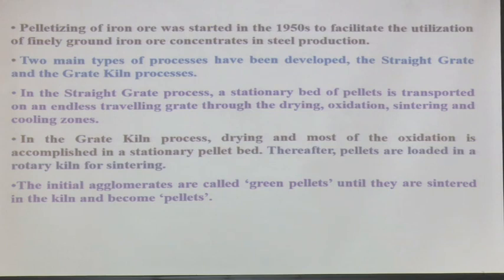In the grate-kiln process, drying and most of the oxidation is accomplished in a stationary pellet bed — that is more of a design issue regarding how to heat and cool them. The initial agglomerates are called green pellets, and until they are sintered in the kiln and become pellets, that is your firing.